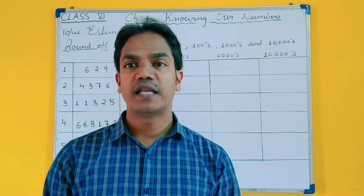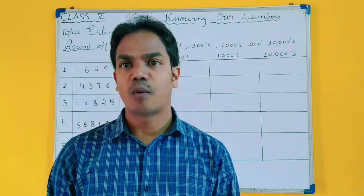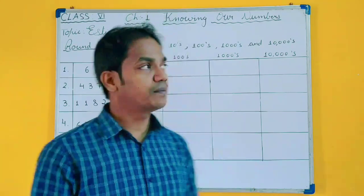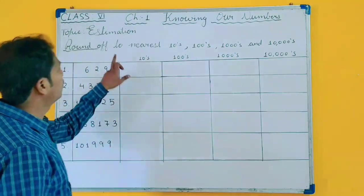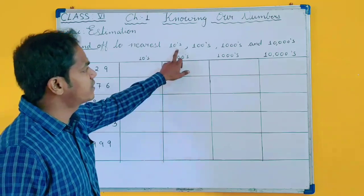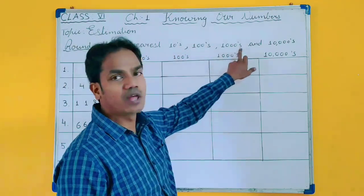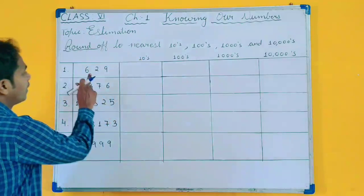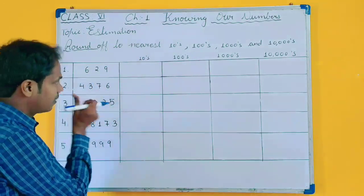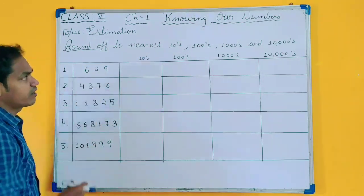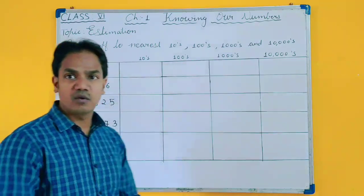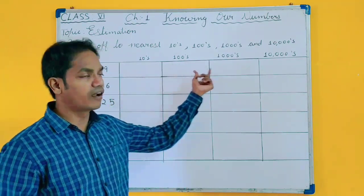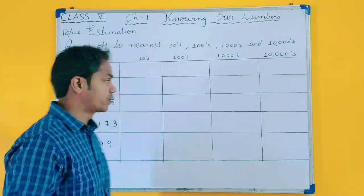Hello students, today we will take a new topic: estimation, from chapter number 1. In estimation we have to do round off to nearest tens, hundreds, thousands, and ten thousand. I have taken 5 questions, and for all the questions I will explain how you will round off into tens, hundreds, thousands and ten thousand.